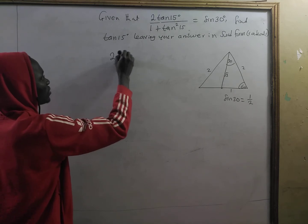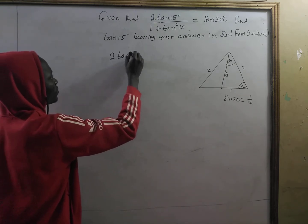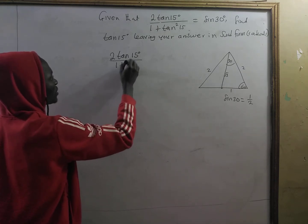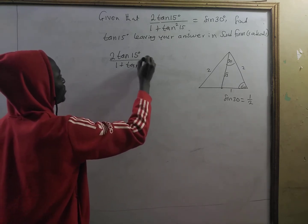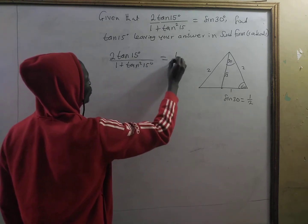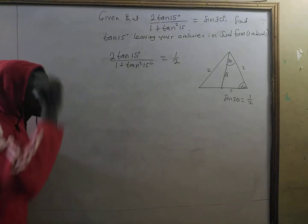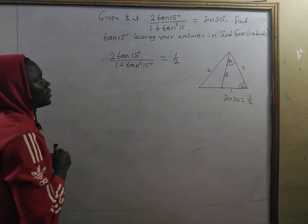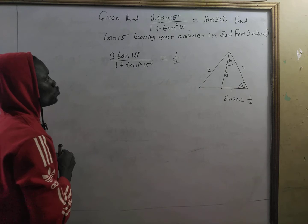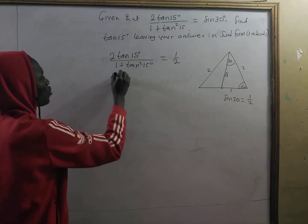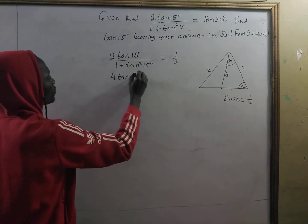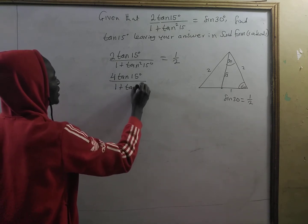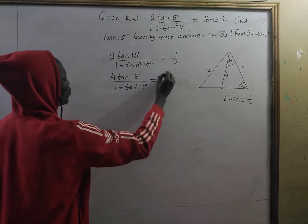So sine 30 is one out of two. Now we have two times tangent of 15 degrees divided by one plus tangent squared of 15 degrees is equal to one out of two. If we multiply both sides by two, we get four tangent of 15 degrees divided by one plus tangent squared of 15 degrees is equal to one.